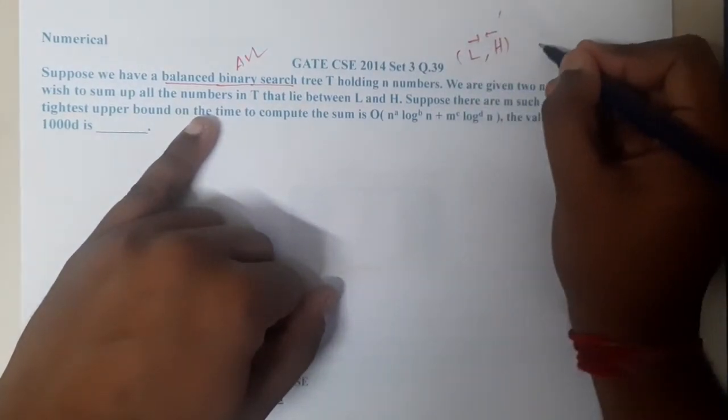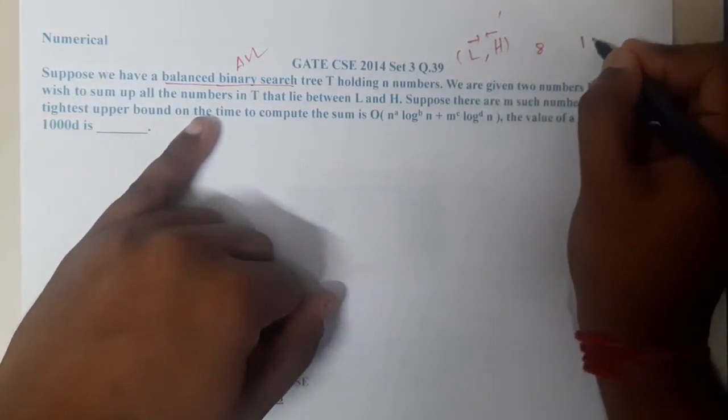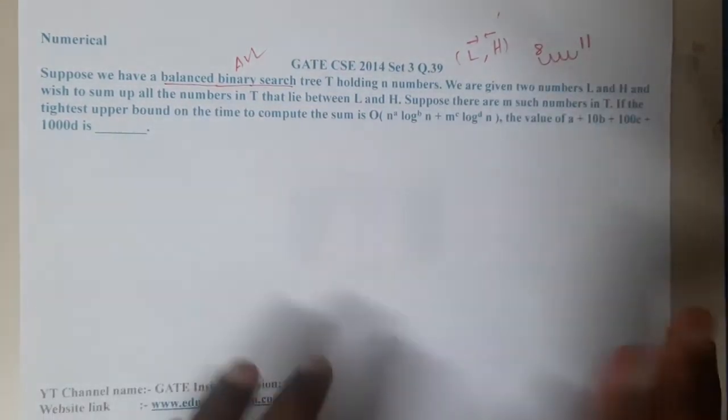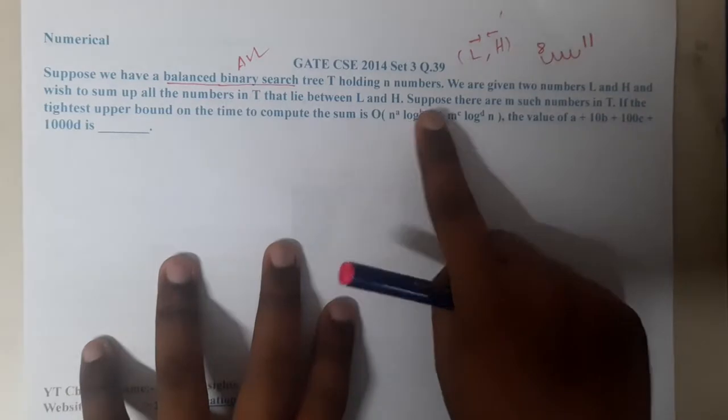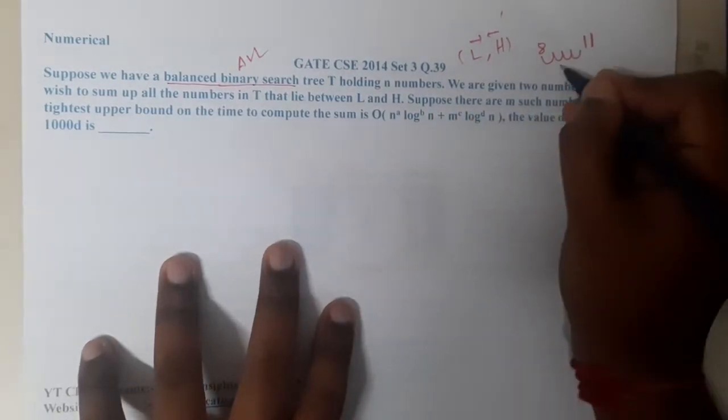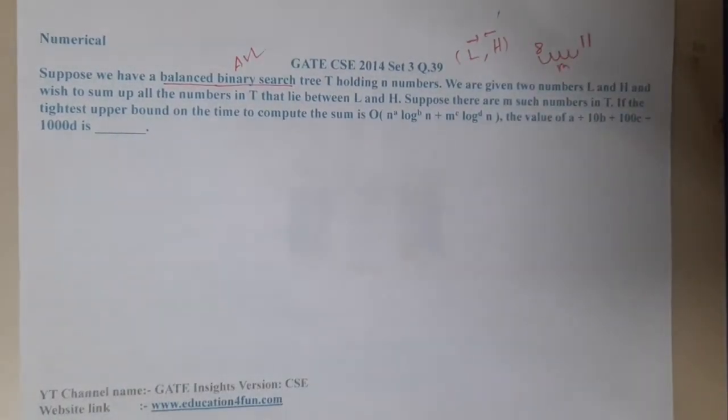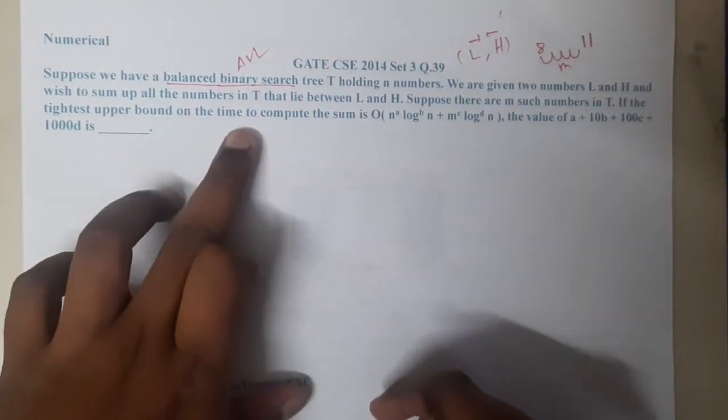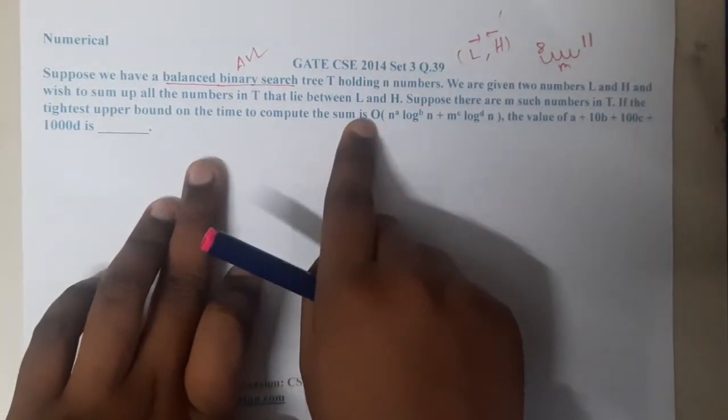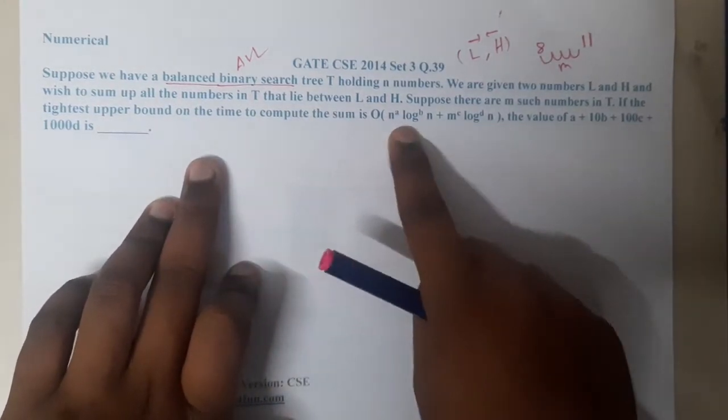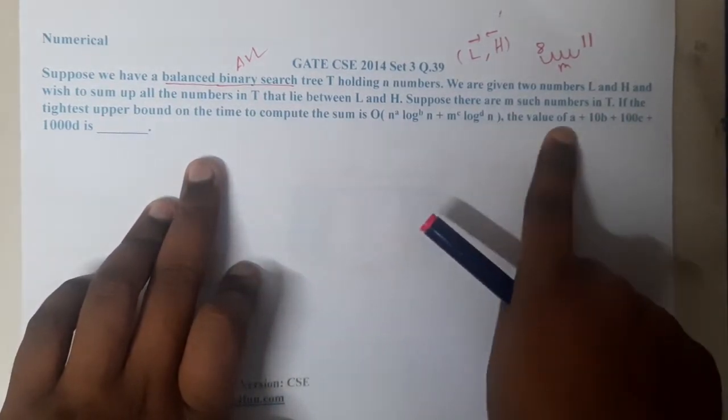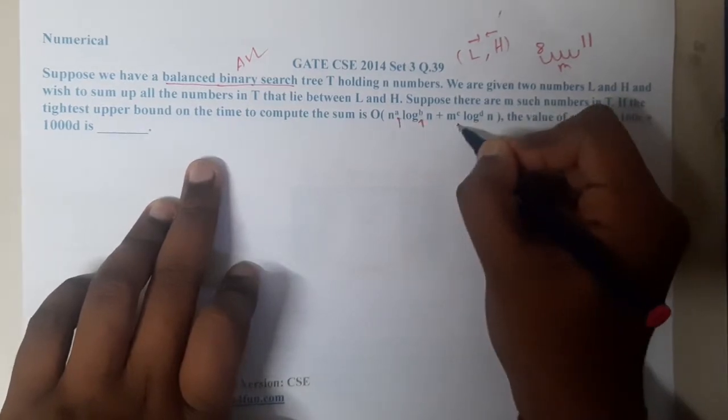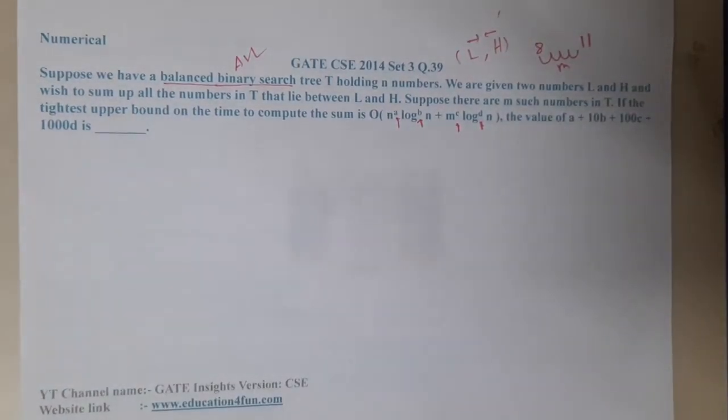We wish to sum up all the numbers in the tree that lie between L and H. L will be a smaller number and H will be a greater number. Suppose there are m such numbers. If the tightest upper bound on the time to compute the sum is in this way, then what is the value of a, b, c? Basically, here they give some dashes so we need to fill them.